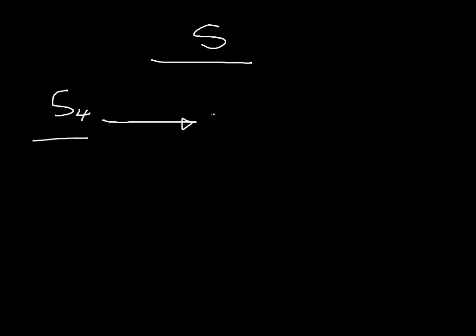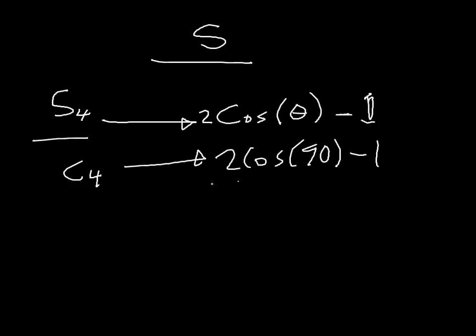So when you're calculating the contribution per atom, which I haven't gotten to yet but we will, it's 2 times the cosine of theta minus 1. And just like you would with a C4, for S, you're just going to go 2 times cosine of 90 minus 1. Because remember this is just 360 divided by 4. That's what that designates there. It's 360 over N. So you're going to get 90 from that. And that's what you put in there for that angle.